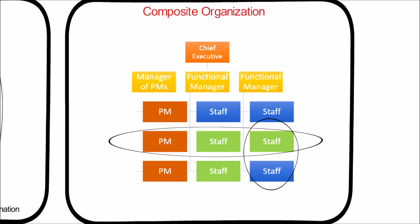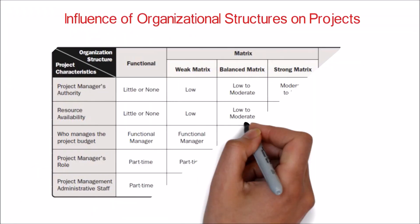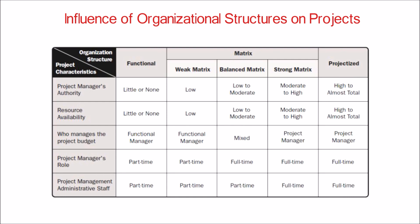In this video, we will look at the grid which explains the influence of organizational structures on projects. Here we have listed each possible organization type and project characteristics. Then for each of these combinations, we have defined how the project manager's authority varies.